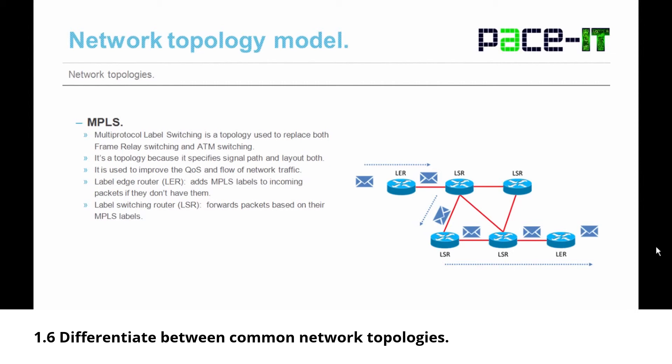Now let's discuss MPLS — Multi-Protocol Label Switching. It is a topology used to replace both frame relay switching and ATM switching. It's a topology because it specifies a signal path and layout. MPLS is used to improve the quality of service and flow of network traffic. It uses Label Edge Routers (LERs), which add MPLS labels to incoming packets if they don't already have them. The LERs then pass the packets along to LSRs — Label Switching Routers — which forward packets based on their MPLS labels.